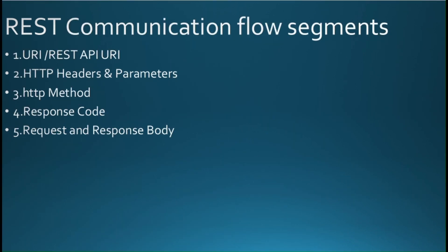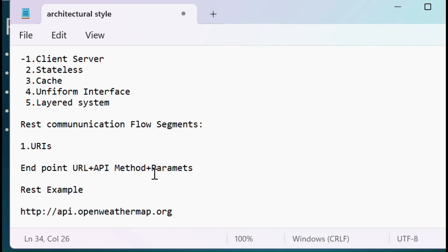Now let's go through the five important REST communication flow segments. First is the URI and REST API; second is HTTP headers and parameters; third is HTTP methods; fourth is response codes; and fifth is request and response body. A URI — Uniform Resource Identifier — is the location of a web service and can include hostname, IP address, port number, path, and an optional query string. A REST API is a way to communicate between systems using HTTP technologies, and it can share data between two distributed applications.